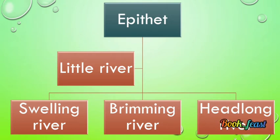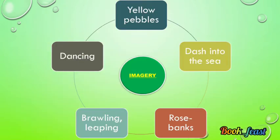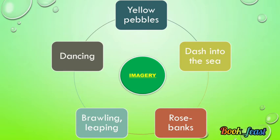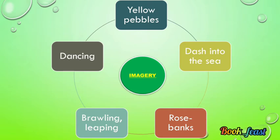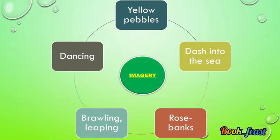Imagery — when you read something, automatically your mind comes up with an image of what you read. If so, that is imagery. Here you can see the imagery includes: yellow pebbles, dashed into the sea, rose banks, brawling, leaping, and dancing.